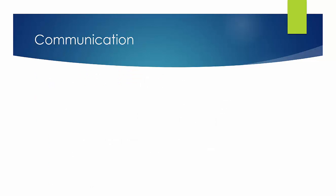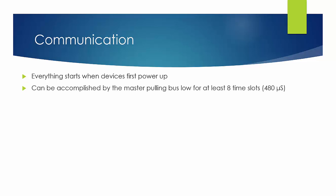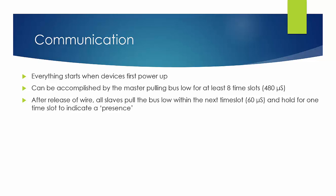So what are the basics of communication? Everything starts when the devices are first powered up. And that can be accomplished by the master pulling the bus low for at least eight time slots or 480 microseconds. So basically what is happening is that since these devices are using parasitic power off the bus, when the master pulls the bus low for this extended period of time, they all run out of power. And so when the master releases the bus and it floats up, all of the devices see that as their first power up. After the release of that wire, all slaves will pull the bus low within the next time slot and hold it for one time slot to indicate their presence on the bus.